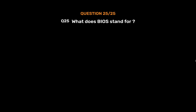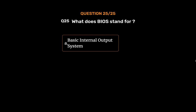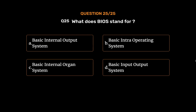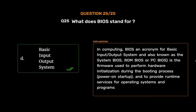Question No. 26: What does BIOS stand for? Option A: Basic Internal Output System, Option B: Basic Intra-Operating System, Option C: Basic Internal Organ System, Option D: Basic Input-Output System. The correct answer is Option D, Basic Input-Output System. In computing, BIOS — an acronym for Basic Input-Output System, also known as System BIOS, ROM BIOS, or PC BIOS — is the firmware used to perform hardware initialization during the booting process (power-on startup) and to provide runtime services for operating systems and programs.